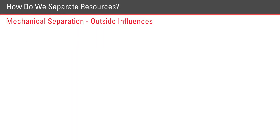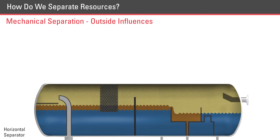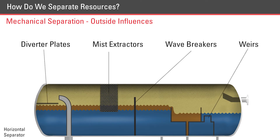Some other outside influences that are needed to achieve separation are mechanical devices, such as diverter plates, wave breakers, mist extractors, and weirs.